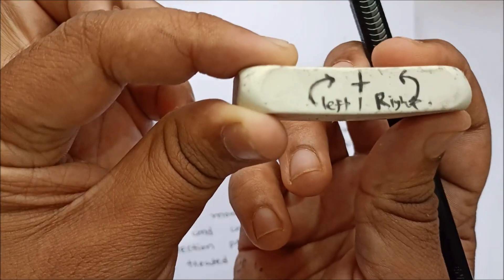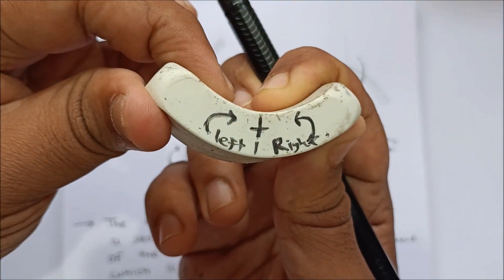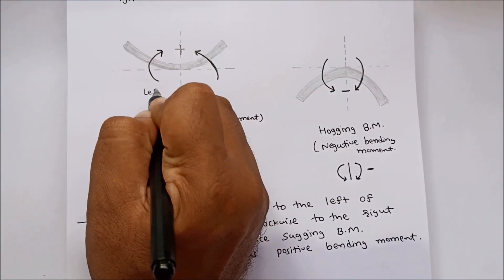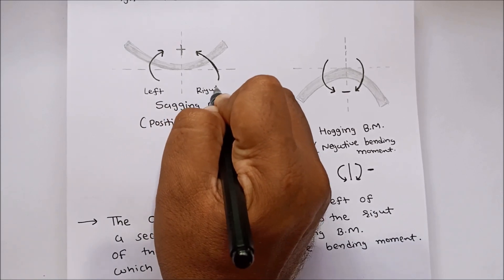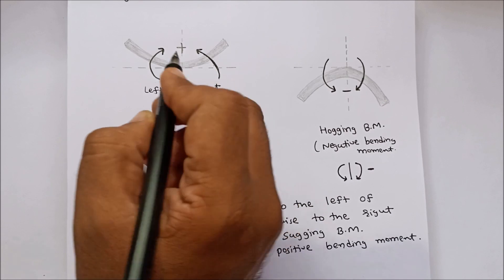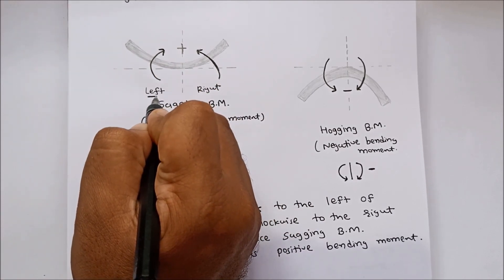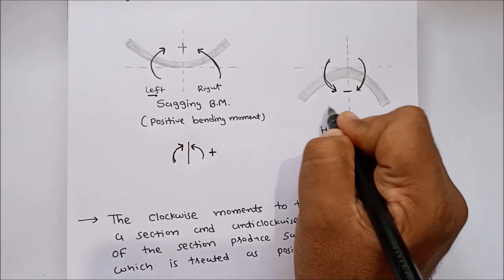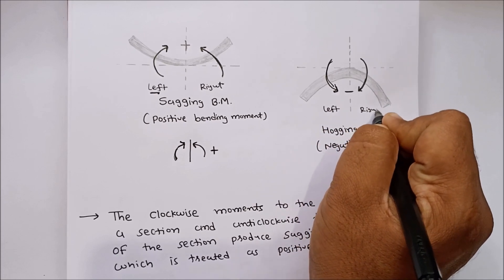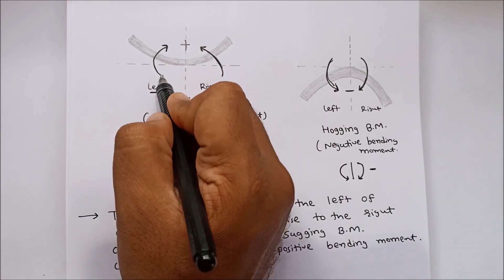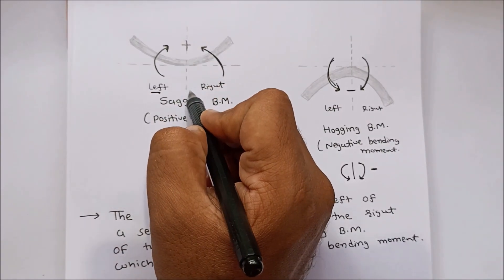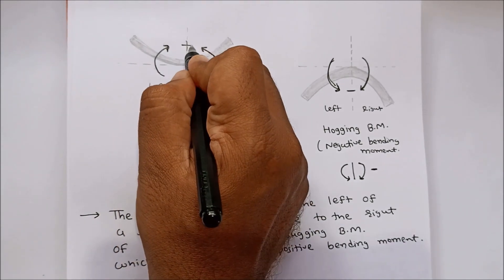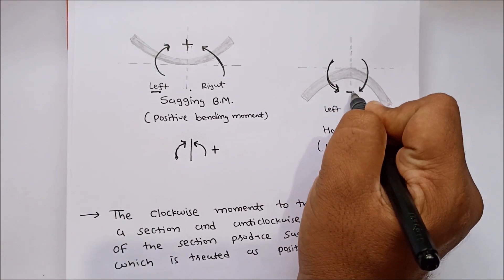So on the left side of the section we give clockwise moment and on the right side we give anticlockwise moment. Clockwise moment due to all forces to the left of the section are considered as positive, and anticlockwise is taken as negative.